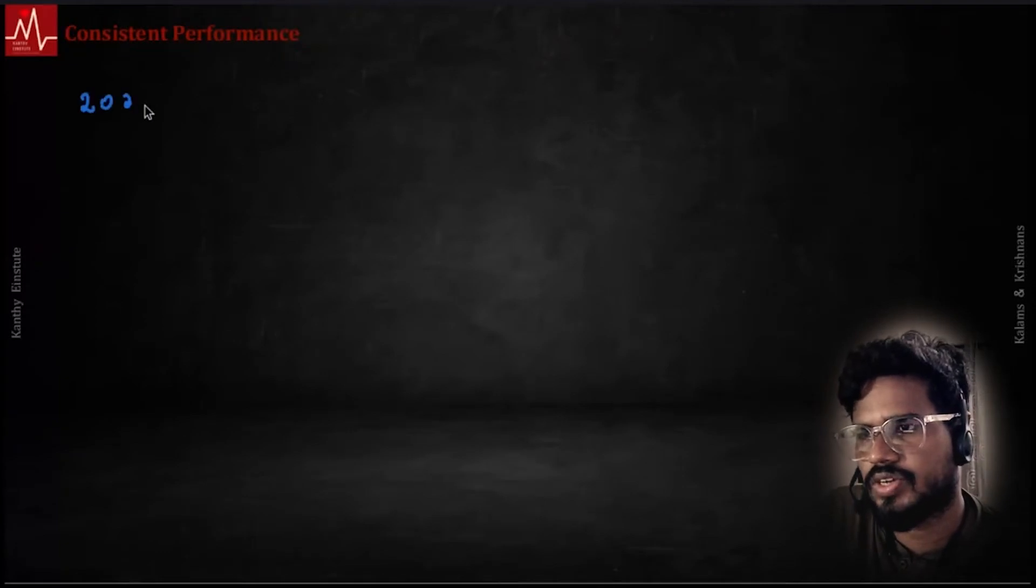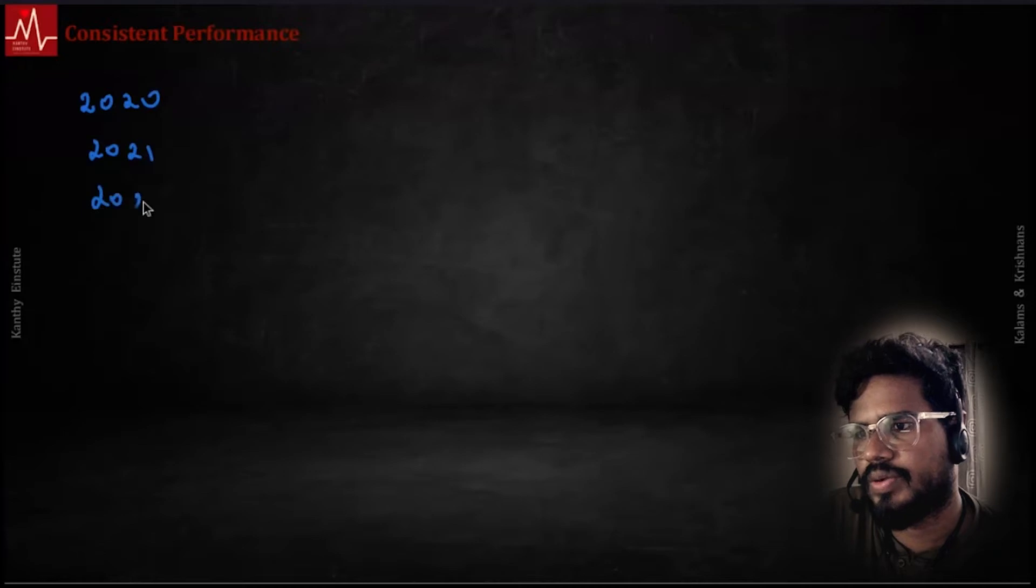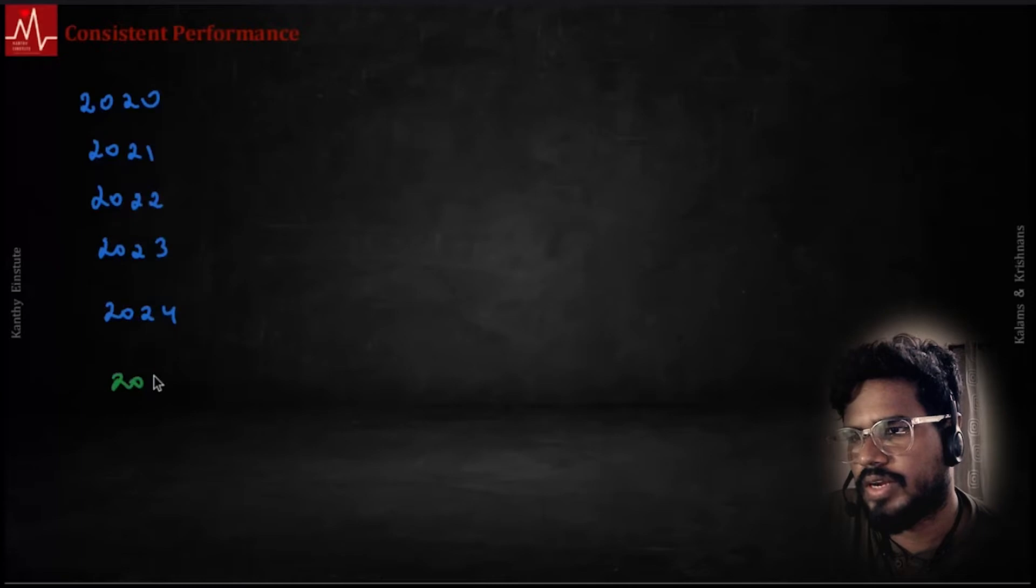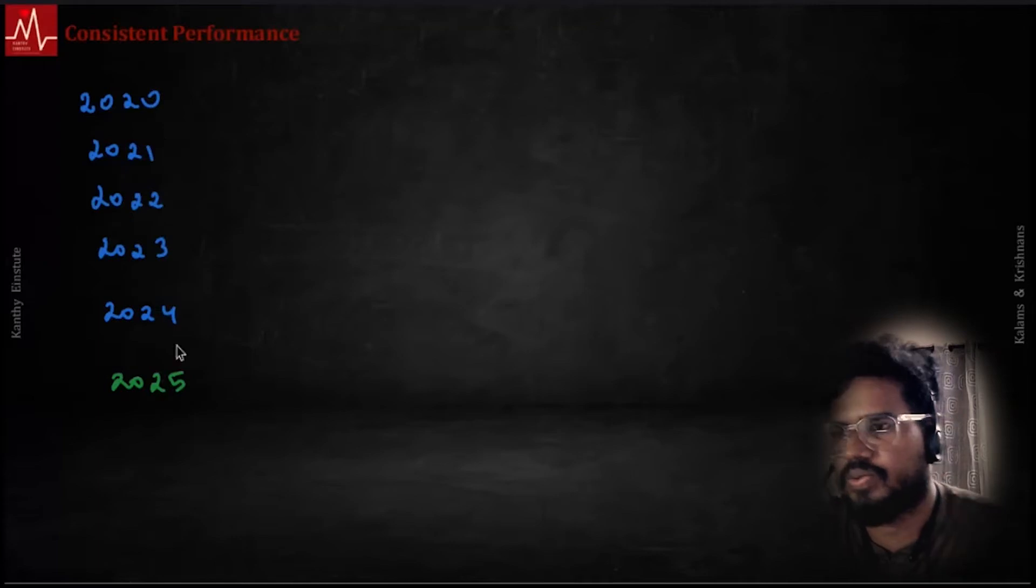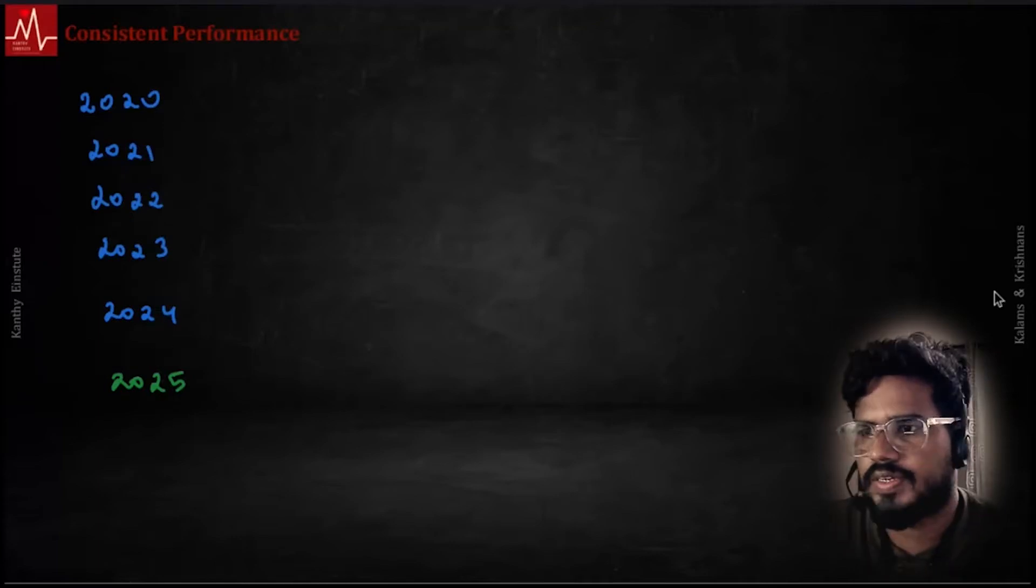Since the biomedical exam started in 2020, 2021, 2022, 2023, right? Even 2024 and now this is the 2025 batch. So every year I can actually almost show many single digits, not just one or two. Why do you think this is the reason?